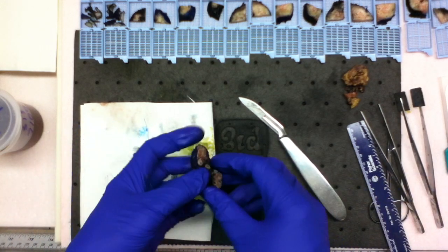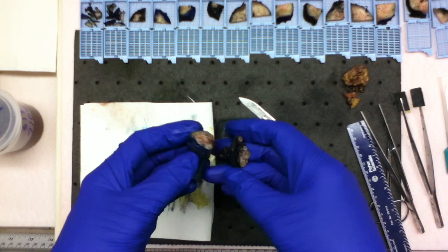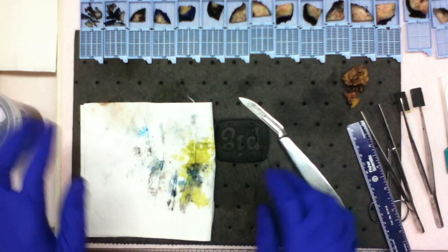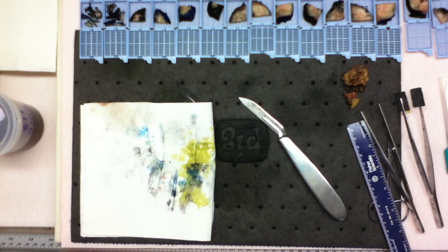And so the only thing you have left in the container is the ends of your vas and seminal vesicles. Everything else has been submitted. And that is how you gross a very large prostate.